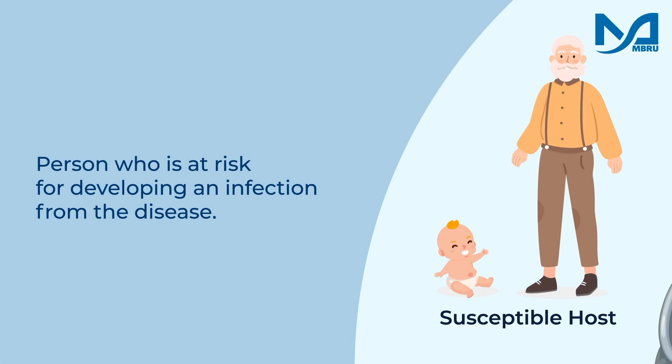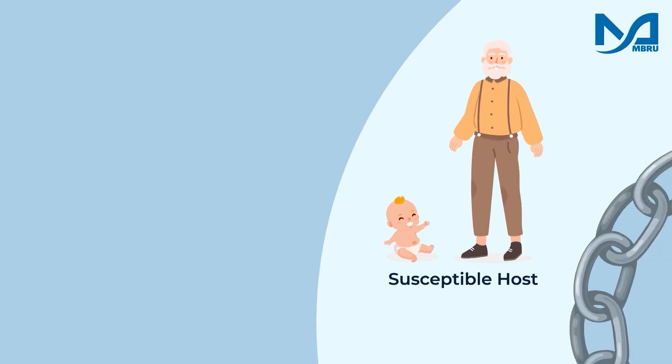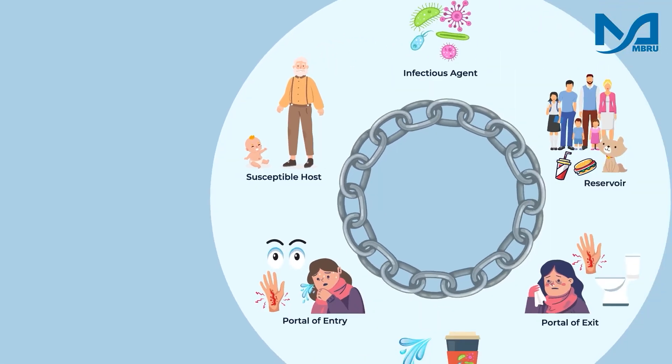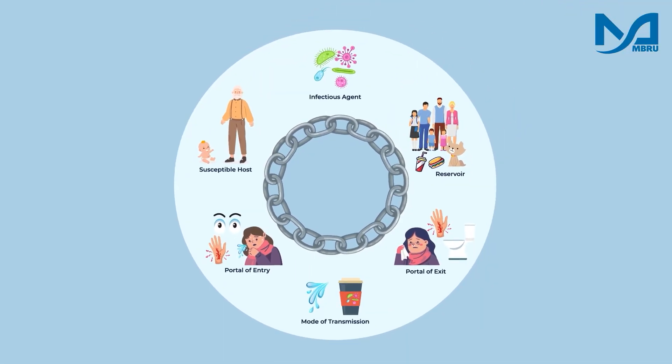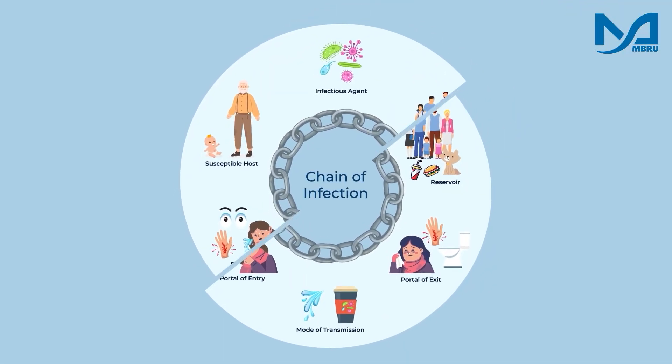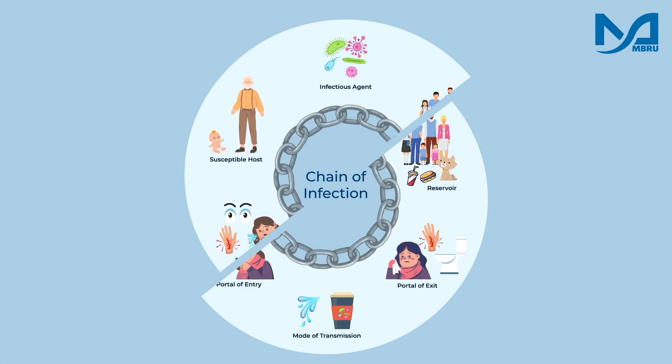Finally, we have the susceptible host — it's either a baby, an elderly person, or someone with a weakened immune system. To prevent the spread of disease, one of the links in the chain of infection must be broken.